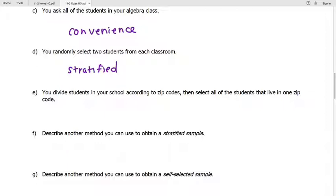We divide students in our school according to their zip codes. We select all the students that live in a single zip code. So we're dividing everybody into different groups and then we're only taking one of those groups to survey. So this is what we call a cluster sample.